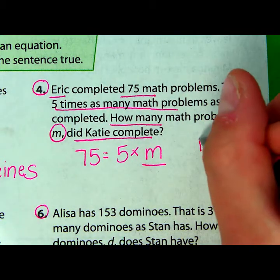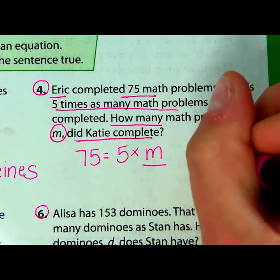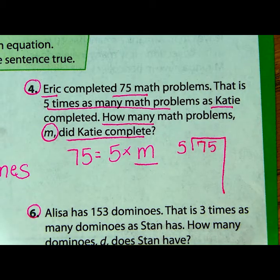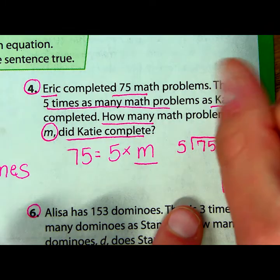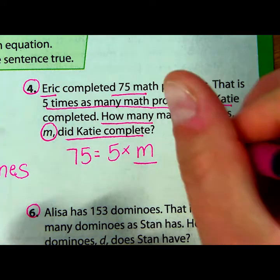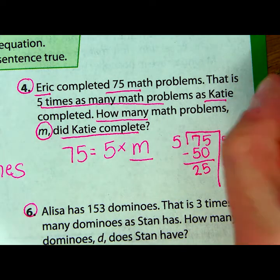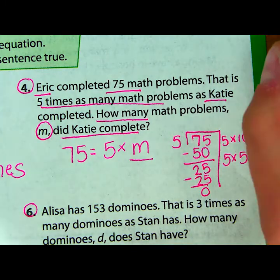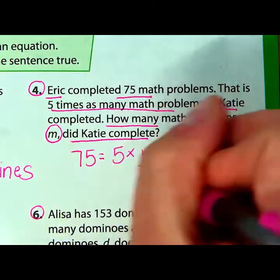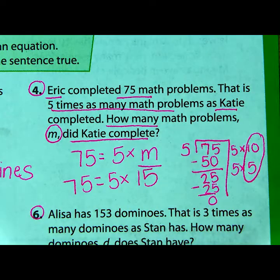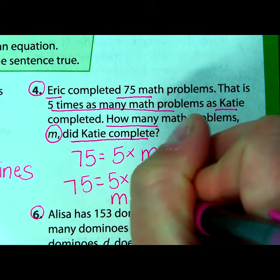We have an unknown factor problem, so we could use partial quotients where we divide, and we have five going into 75. Using partial quotients, five can go into 75 — I could take away a group of 10: five times 10 is 50. When I subtract, that leaves me with 25 remaining. And five times five is equal to 25. Nothing remaining. Adding up my partial quotients, 10 plus 5: 75 is equal to 5 multiplied by 15. Therefore m is equal to 15 math problems.